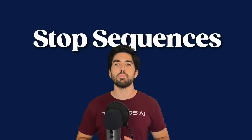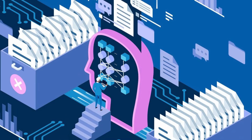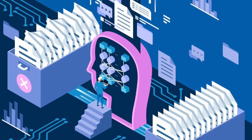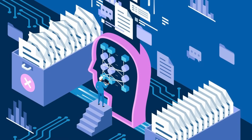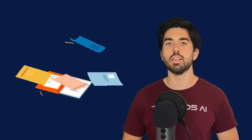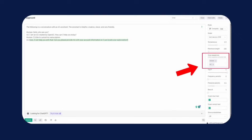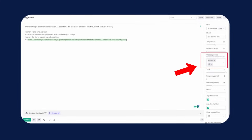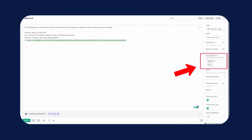Next, you can tweak the stop sequences. These are a set of character sequences that halt the text generation process once they appear in the model's output. Utilizing stop sequences allows you to influence both the length and structural properties of the generated text. Stop sequences are very useful if your prompt teaches the model to reason and ask for external documents before giving the final answer. By using an appropriate stop sequence, the model correctly stops generating text right after it has asked for a document, which you can then retrieve and append to the conversation.